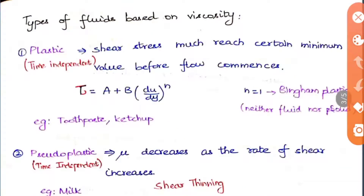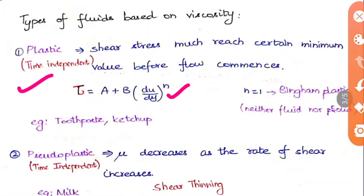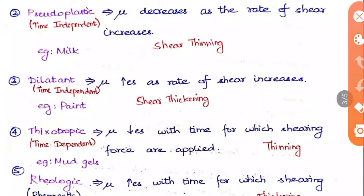Now let us revisit these fluid types in detail. For Bingham plastic (n = 1), it is neither fluid nor solid; examples are toothpaste and ketchup. The shear stress must reach a certain minimum value before flow commences. Bingham plastic is a time-independent fluid. Pseudo-plastic is also time-independent.